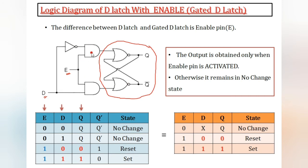This is the gated D latch. The enable pin plays a very important role. If enable is 1, then the circuit is activated and it produces an output. If enable is 0, the circuit is not activated and the output remains the same — that is the no-change condition.